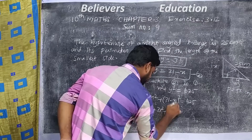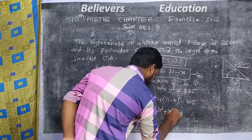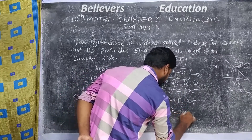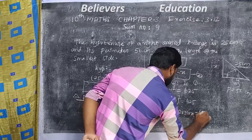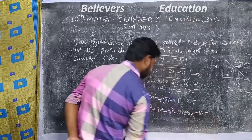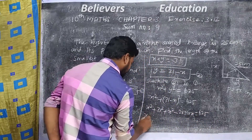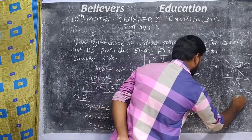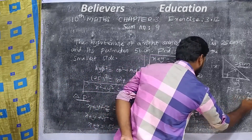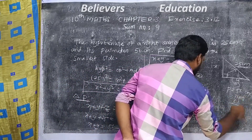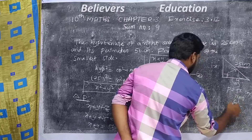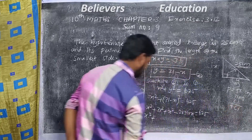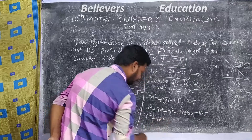Expanding using the formula (a minus b) whole squared equals a squared minus 2ab plus b squared: x squared plus 31 squared minus 2 times 31 times x is equal to 625. So x squared plus 961 minus 62x equals 625. Now 31 squared equals 961, since 31 times 31 equals 961.